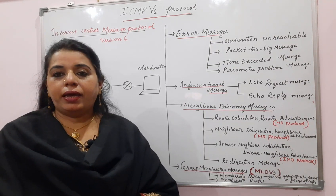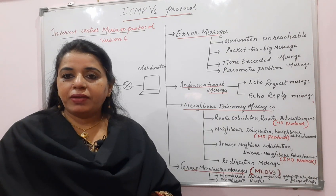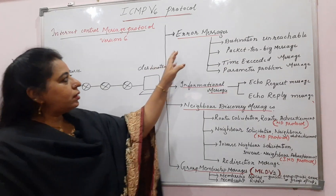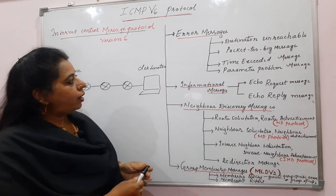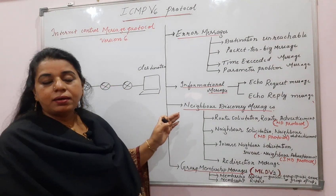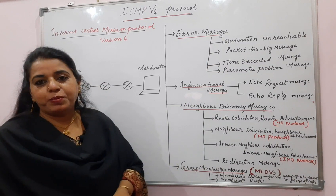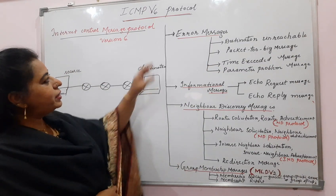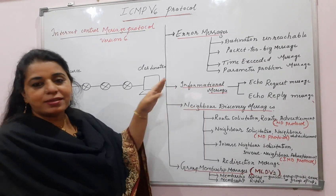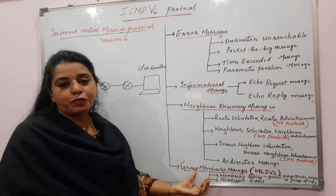Now, what are the different error messages in ICMPv6? Looking at the categories - the ones underlined in red are the main categories, and under each category you can see different types of messages. The first category is error messages, second is informational messages, third is neighbor discovery messages, and the fourth is group membership messages.